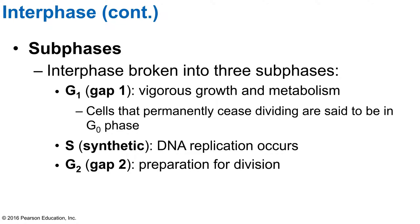These sub-phases are broken down into three parts. The first is the G1 phase. There's also a G0 phase — when a cell permanently stops dividing, it enters the G0 phase. The G1 phase is when the cell is growing, going about doing everything it normally does, metabolizing. This is the normal part of the cell's life cycle.